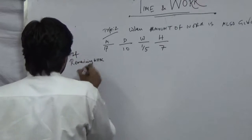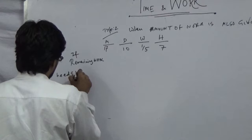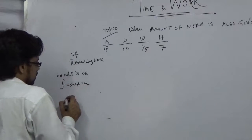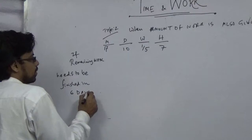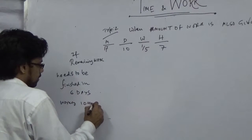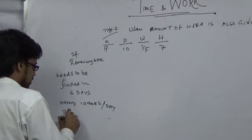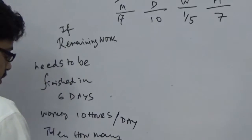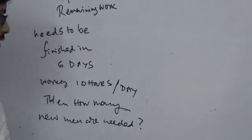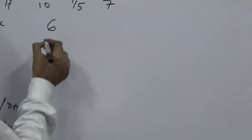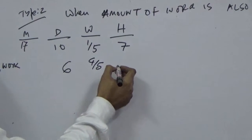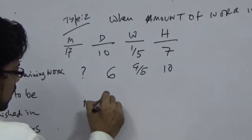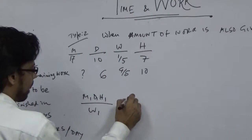If the remaining work needs to be finished in 6 days working 10 hours per day, then how many new men are needed? You have 6 days working, the remaining work is 4 by 5, and 10 hours per day. The formula is M1, D1, H1, W1 equals M2, D2, H2, W2.